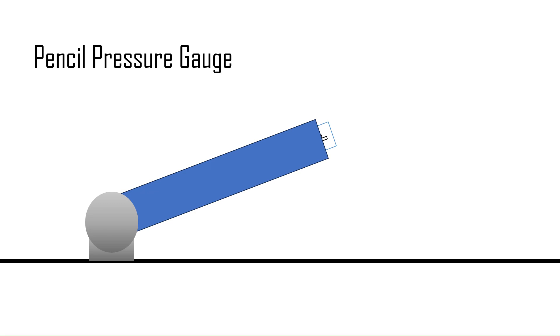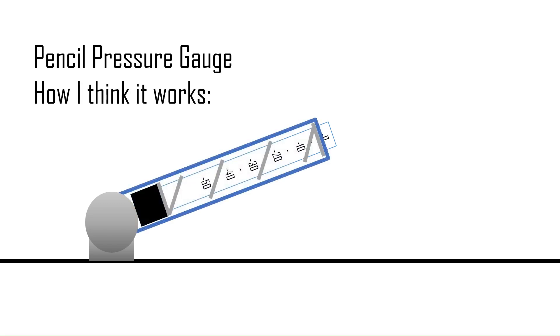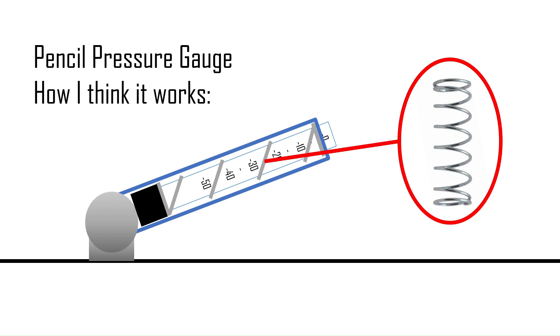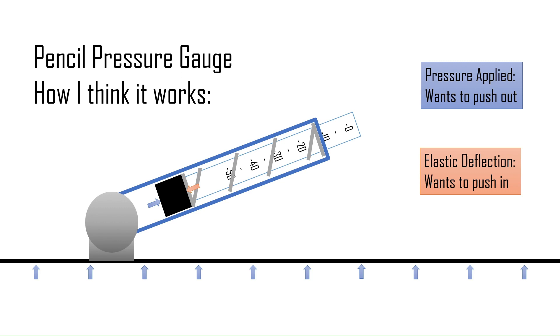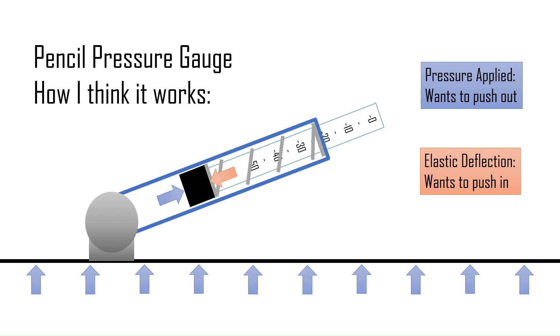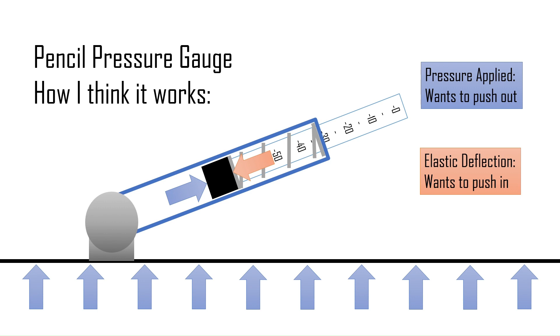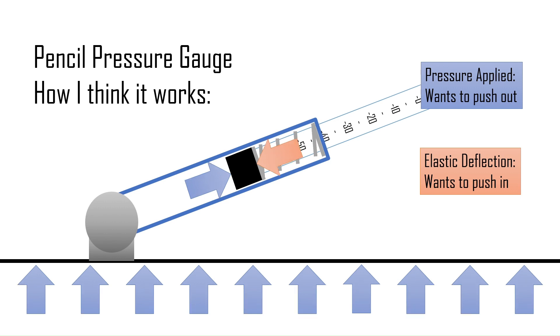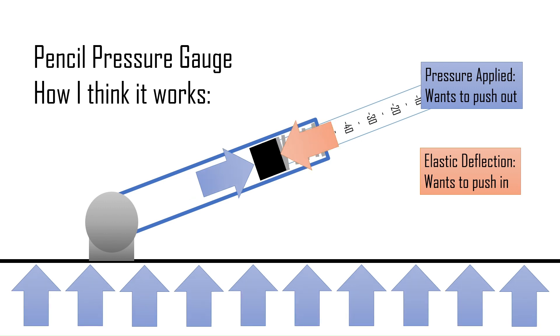The pencil has a strong chance of working like the Bordon tube. A compression spring holding down a piston head would function in the same way. When pressure is applied, the spring will elastically deform a proportional amount correlating to pressure. The piston head would be connected to the linear pressure indicator. Solved, right?